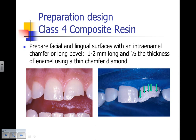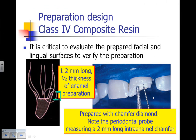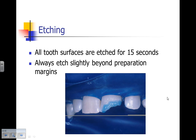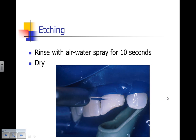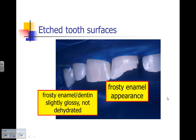Our preparation design for the Class 4 is an intra-enamel chamfer one to two millimeters long, half the thickness of the enamel — a long bevel could also be used. The length of the chamfer is evaluated with a periodontal probe and prepared with a chamfer diamond. We prepare on both the facial and lingual surfaces to ensure adequate thickness of composite. All tooth surfaces — enamel and dentin — are etched simultaneously for 15 seconds, slightly beyond the preparation margins. After rinsing for 10 seconds and drying, the enamel will have a frosty appearance. The dentin can be left dry in this case since the dentinal surface is small and enamel is our primary retentive structure.